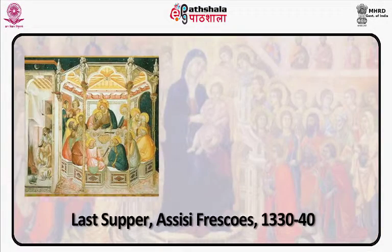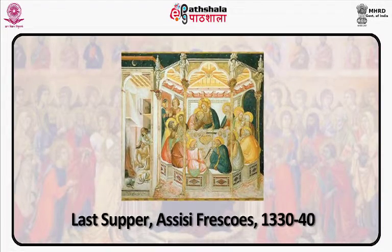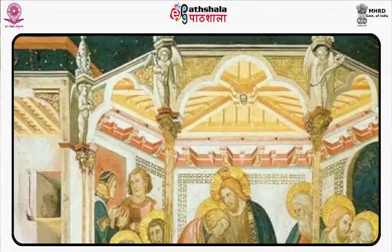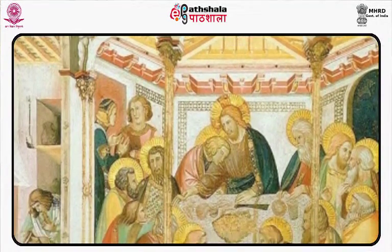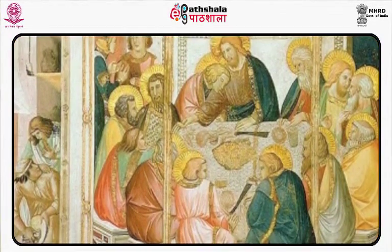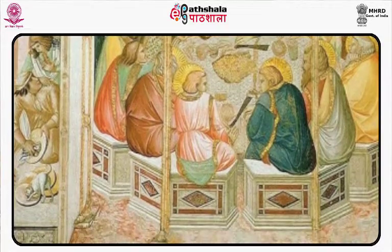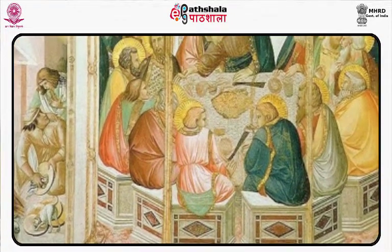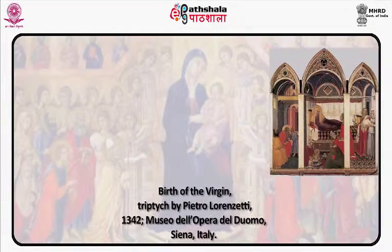Let us now see the Last Supper of the Assisi frescoes, painted 1330 to 1340. Perhaps Lorenzetti's most ambitious work is the fresco cycle in the left transept of the lower church of San Francesco in Assisi. These 17 well-preserved frescoes — the high point of his early career — show the influence of Giotto's monumentality, the impulse of Pisano's 13th century Expressionism, and the teaching of Giotto.